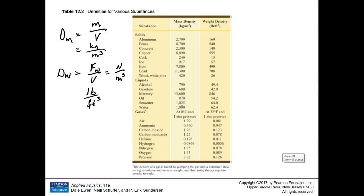For pure substances, if you know the density you know the substance, and if you know the substance you know the density. It's mixtures like air, concrete, and pine wood where it's hard to say — they just give an average.